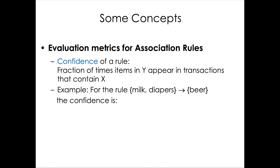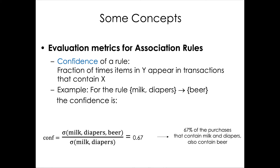The confidence of a rule tells us the fraction of times items in Y appear in transactions that contain X. For the rule milk and diapers implies beer, the confidence is the support of the item set {milk, diapers, beer} divided by the support of {milk, diapers}. In other words, given a transaction containing milk and diapers, what is the probability it also contains beer? If the confidence is 0.67, it means 67% of purchases containing milk and diapers also contain beer — this is essentially a conditional probability estimated by counting.